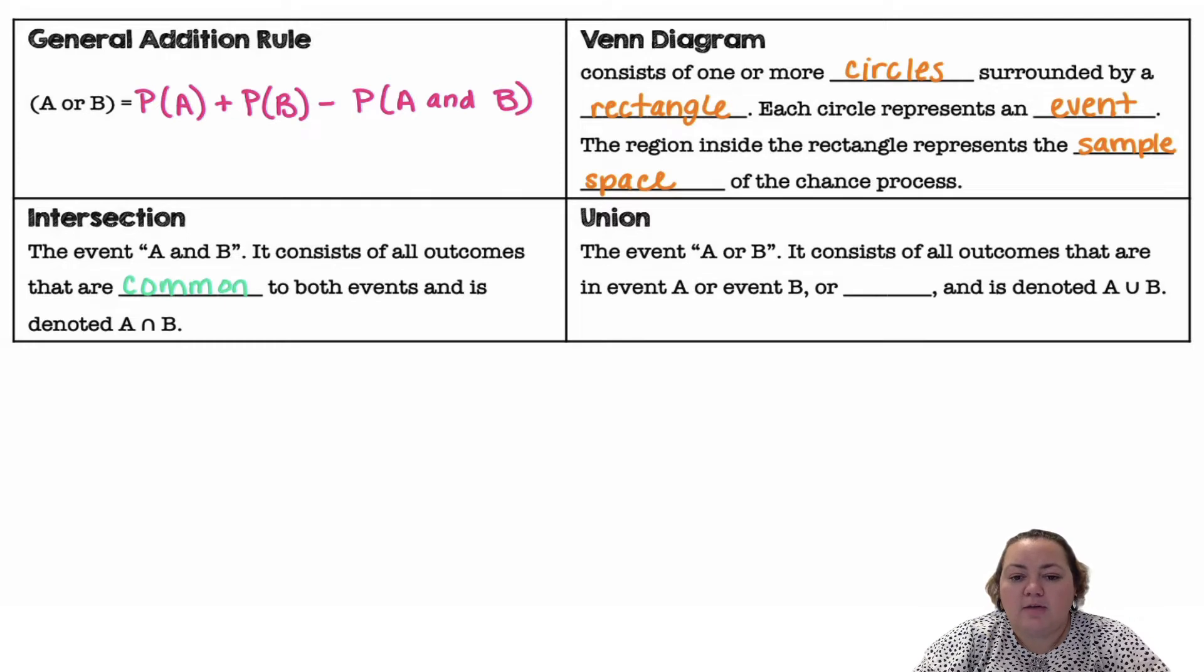Union are the events A or B. It consists of all outcomes that are in event A or event B or both. And it uses a U symbol and is denoted A or B.